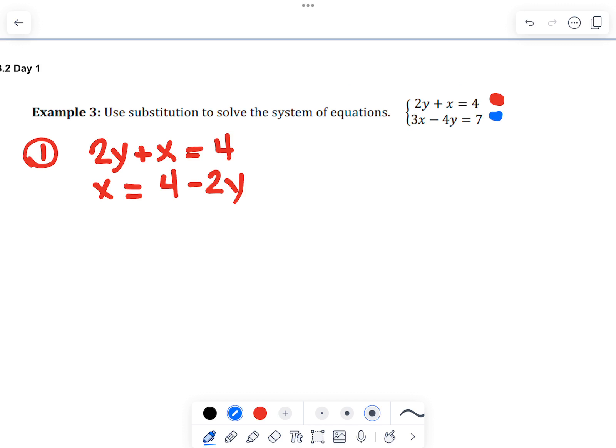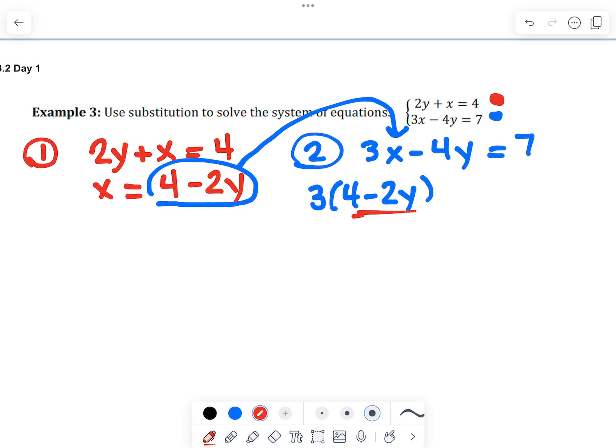Take the other equation. And now this 4 minus 2y is not going in for y. It's going to substitute in for x. So we replace the x with 4 minus 2y. So that piece there is the x from the first equation.